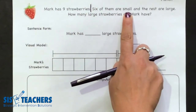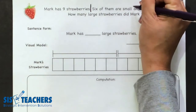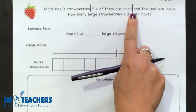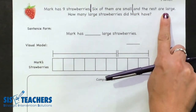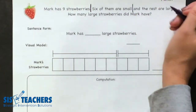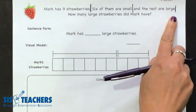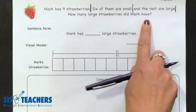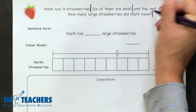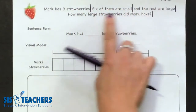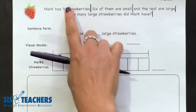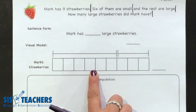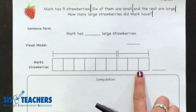Let's continue reading: 'Six of them are small.' I heard some more math information, so kids are going to stop, repeat the statement, and then say chunk. 'And the rest are large' — kids would repeat that and put the chunk. 'How many large strawberries did Mark have?' — chunk. We notice in this story problem that we actually have four chunks of information. We want to make sure that kids are checking off these brackets as they start to fill in our visual model.